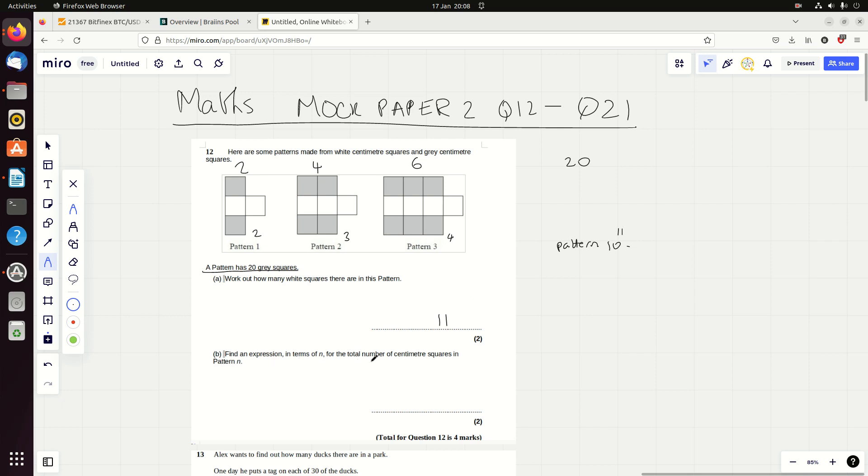Have you noticed as well that there's always one more white square than the pattern number? The white squares go 2 on pattern 1, 3 on pattern 2, 4 on pattern 3. So I guess it's going to be 11 on pattern 10. I haven't got the answers next to me, so I hope I've got this right.